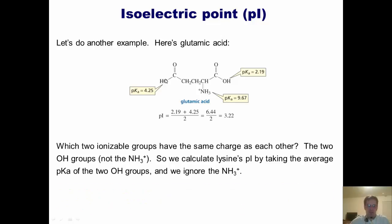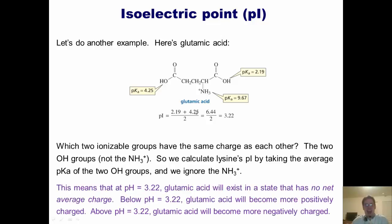If we calculate this thing out, we take 2.19, 4.25, add them together. We get 6.44 divided by 2, and the isoelectric point of glutamic acid becomes 3.22. So that means that at pH 3.22, glutamic acids in solution will exist in a state that has no net average charge. Below pH 3.22, glutamic acid will become more and more positively charged. And above pH 3.22, glutamic acid will become more and more negatively charged.